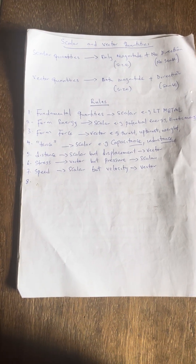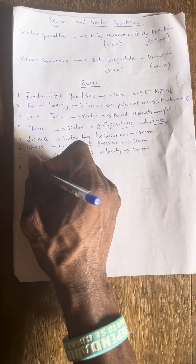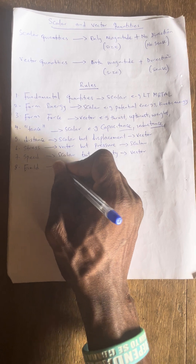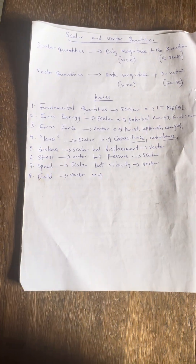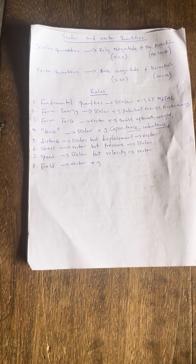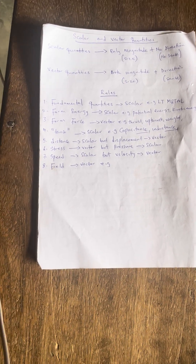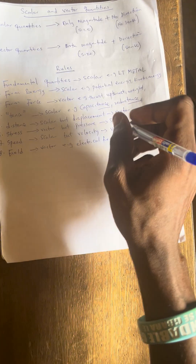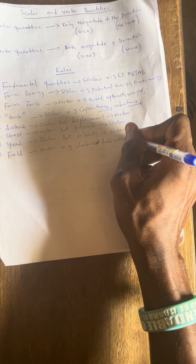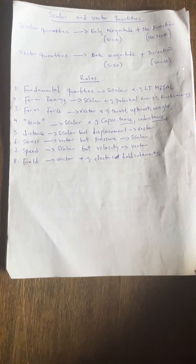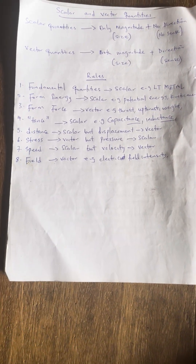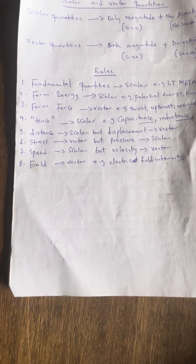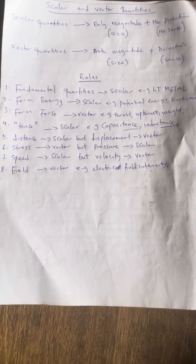Rule number seven: speed is a scalar quantity but velocity is a vector quantity. Rule number eight: most quantities that have 'field' attached to them are vector — for example, electric field intensity, magnetic field, and gravitational field. Any quantity with 'field' attached is vector.